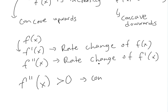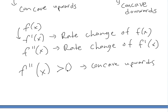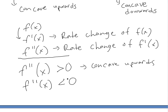And if f prime of x is decreasing, then f double prime of x is less than zero, which means it's concave downwards.